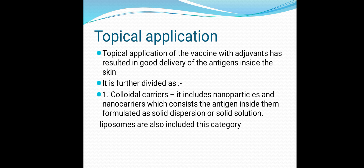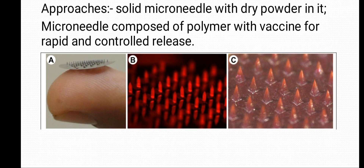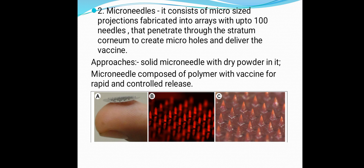Topical application is further divided into: first, colloidal carriers, which include nanoparticles and nanocarriers containing antigen formed as solid dispersion or solid solution, and liposomes. Second is micro needles. A micro needle is very small — in micrometer size — and consists of the drug (vaccine) and the polymer. Up to 100 needles can be present, which are inserted through the skin like a bandage applied over the skin. They penetrate the stratum corneum to create micro holes and deliver the vaccine.